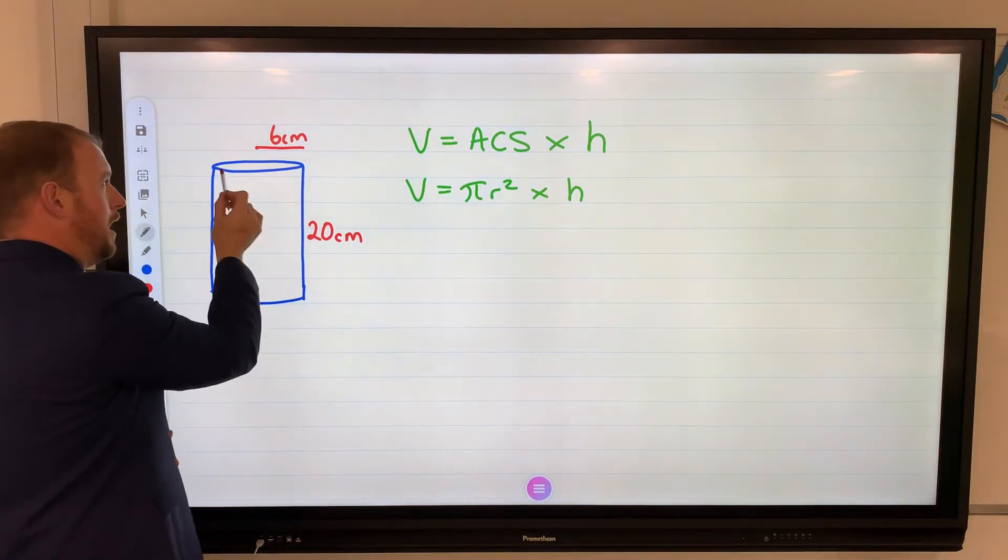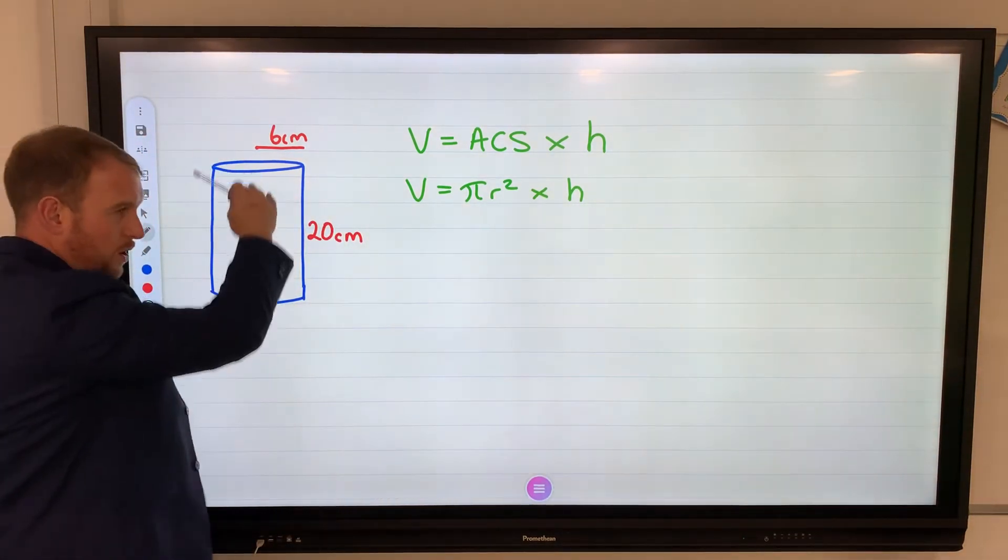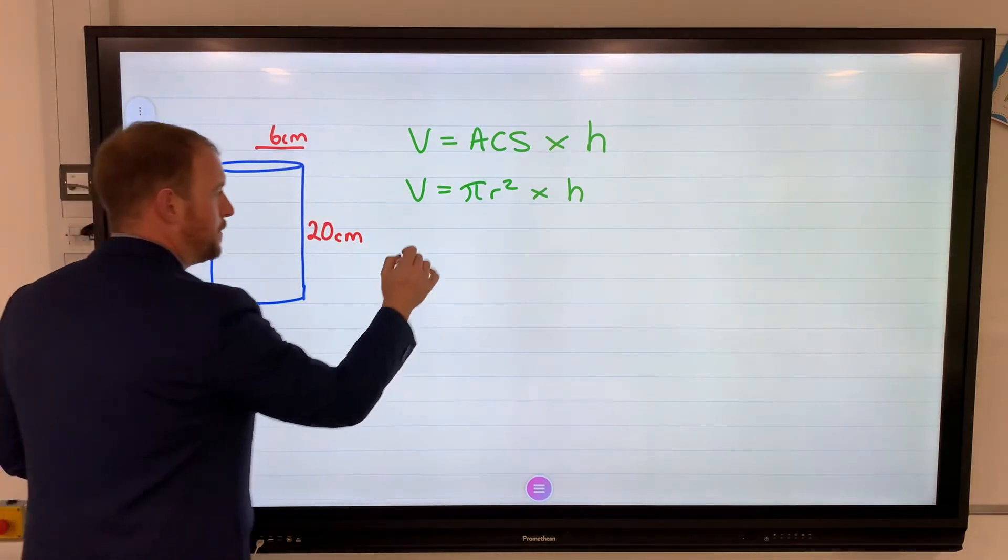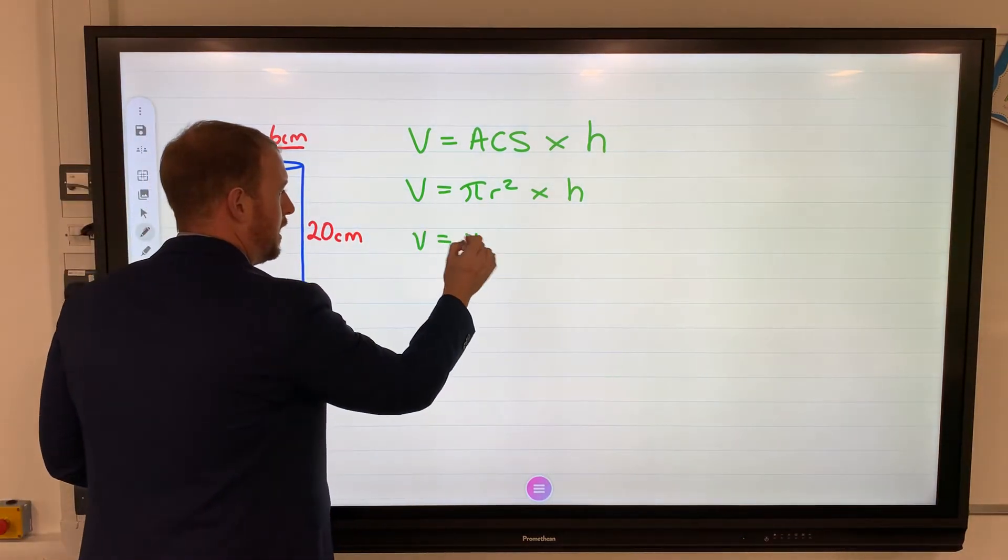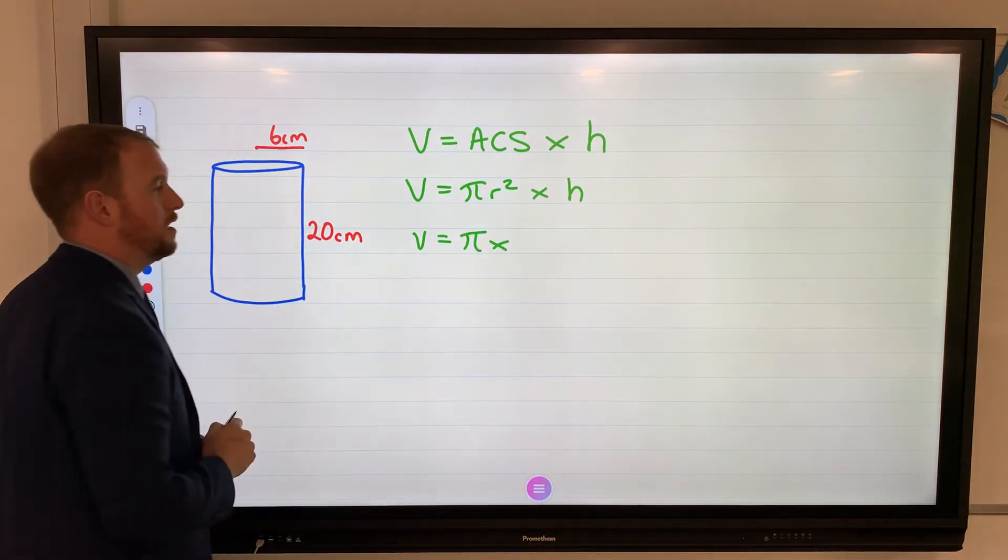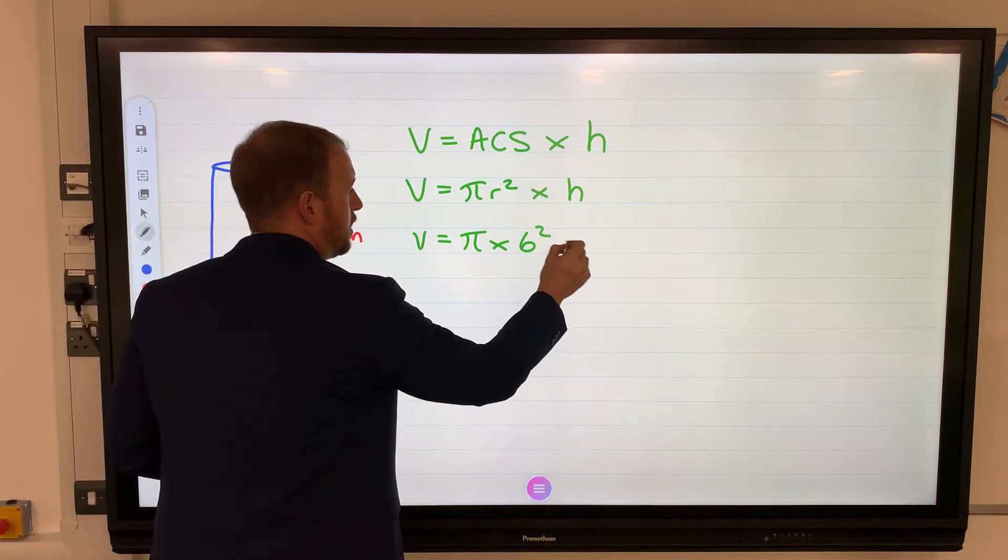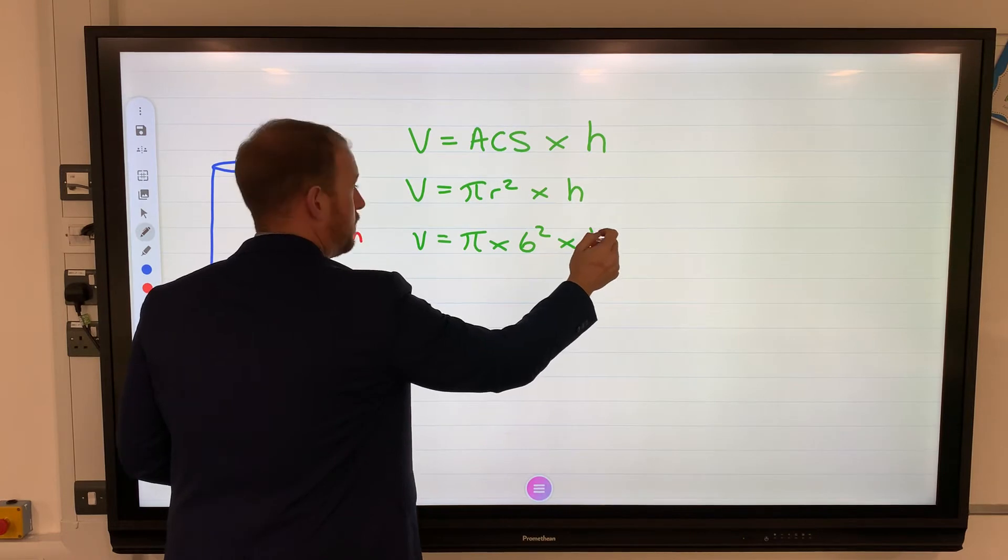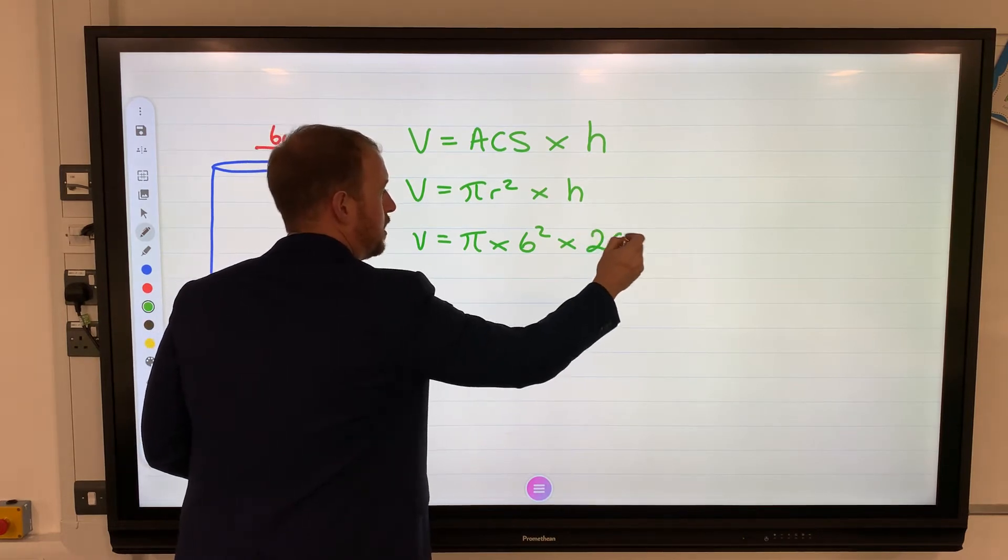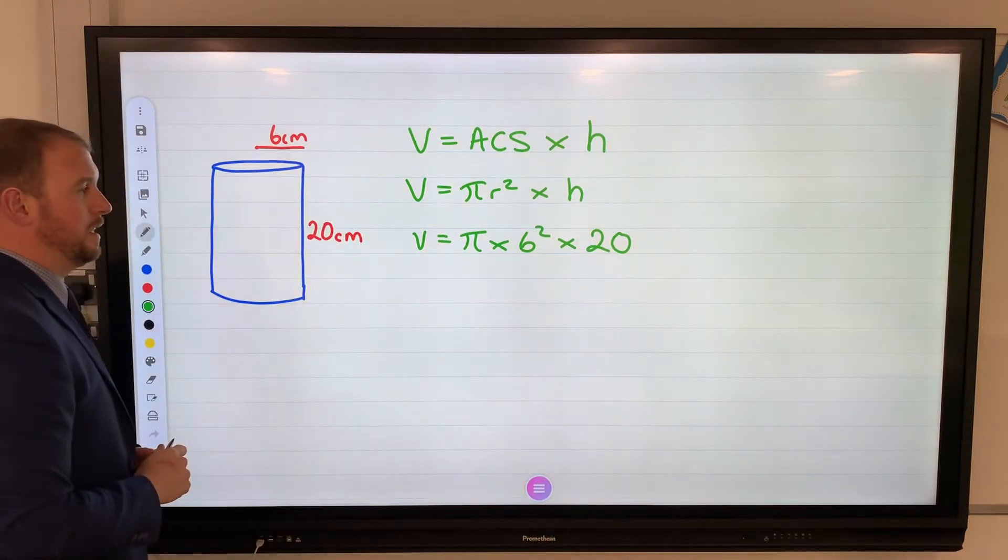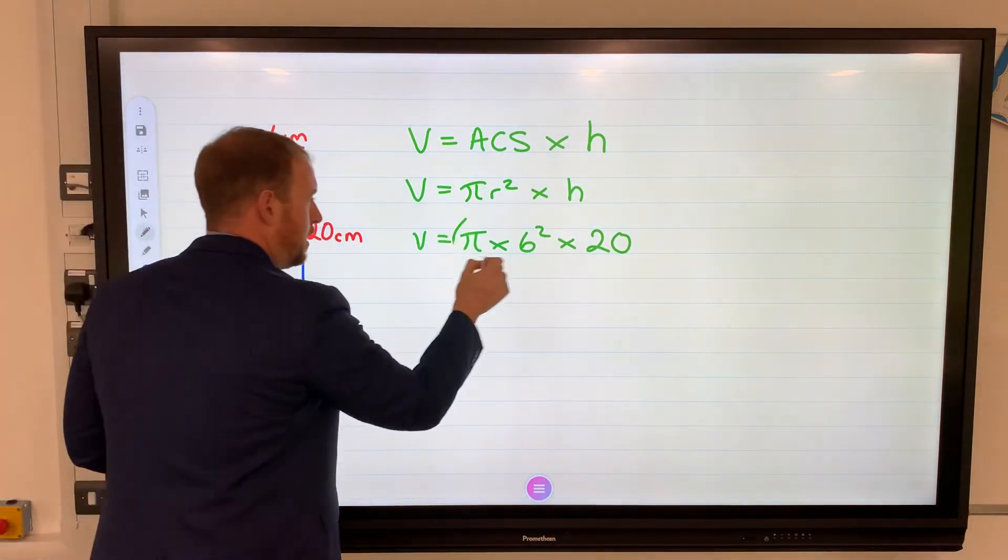So this formula works for every single prism. This is the formula for this one because our cross section is a circle. Obviously the shape is a cylinder. Substitution: pi times r stands for radius. The radius is 6 times h for height which is 20 centimeters.